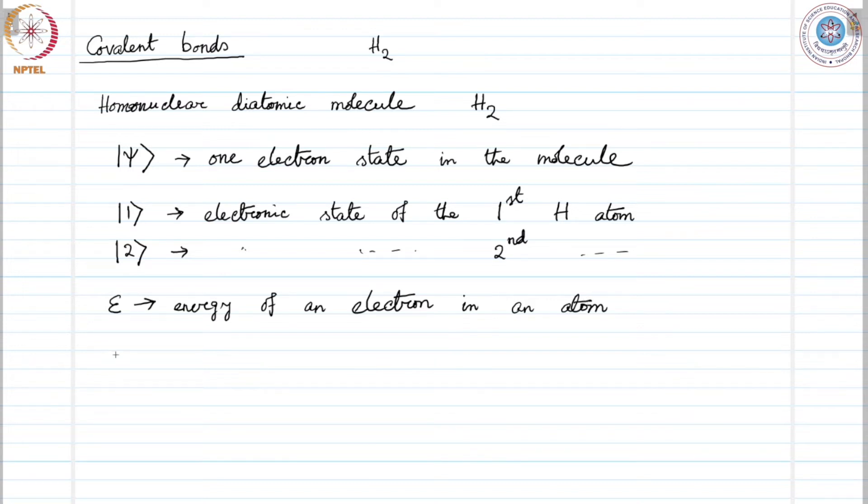If we have small h1 and h2 as the Hamiltonians of atom 1 and atom 2, we use small h because capital H is reserved for hydrogen. Small h represents the Hamiltonian in this case.